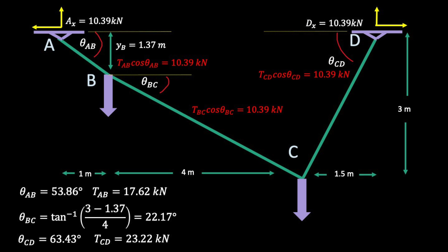We have all the geometry info to solve for theta BC, which means that we can see our steepest angle is theta CD. That means that our maximum tension will be TCD, which is 23.22 kN.